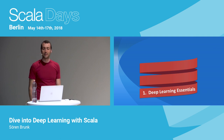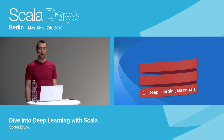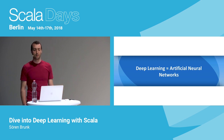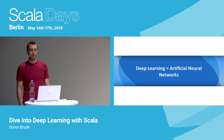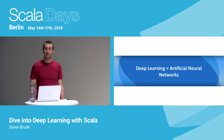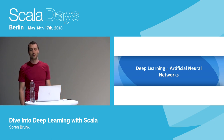Let's climb the first stair: understand what deep learning is at its core. When we talk about deep learning, we usually mean artificial neural networks. Neural networks have been around for decades, but deep learning is a newer term originally used for larger, deeper networks. Now basically all neural networks are considered deep, so we use those terms interchangeably.